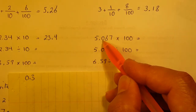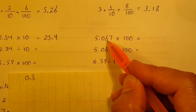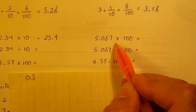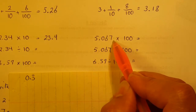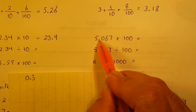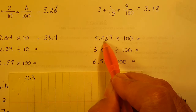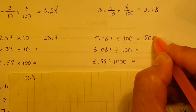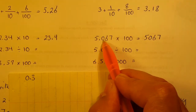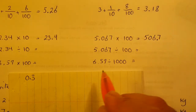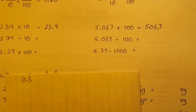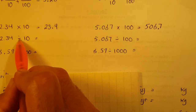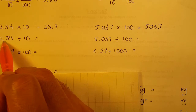5.067 times 100: it's multiplication, so move the decimal to the right. How many zeros do we have? Two. So the decimal moves 2 digits: 5.067 becomes 506.7. For 2.34 divided by 10: it's division, so the decimal moves to the left.